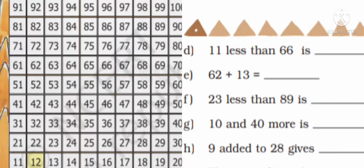So 66 minus 11 will give you 55. Next one, 62 plus 13. If you are in room number 62, then you have to jump one step up, then you will reach to 72, that is 10. Then plus 3, 72, 73, 74, 75. So 62 plus 13 will give you 75.